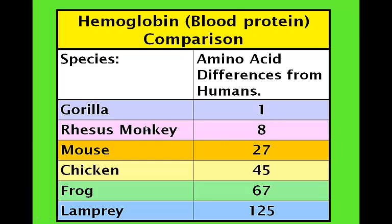As you go to less related species, less related to the human, we see that more and more amino acids are going to be found as different between the two, between the humans and the other species. But gorilla is by far the most similar to the human protein hemoglobin.